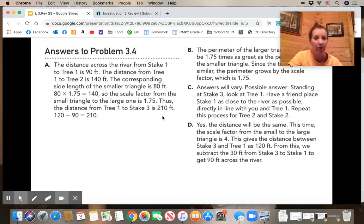In 3.4a you should have found that the distance across the river from Stake 1 to Tree 1 was 90 feet. The distance from Tree 1 to Tree 2 was 140 feet. The corresponding side length of the smaller triangle was 80, so you would have found that the scale factor was 1.75 from the small to the big. So then the distance from Tree 1 to Stake 3 was 210 feet.